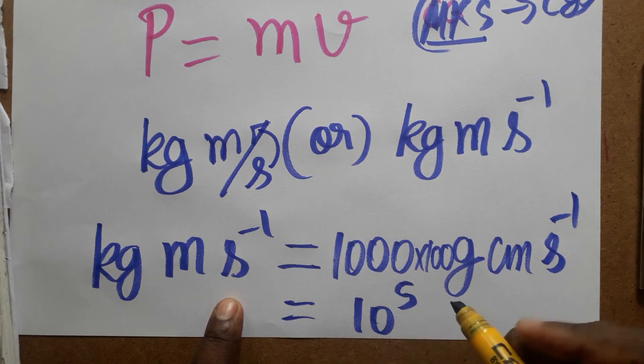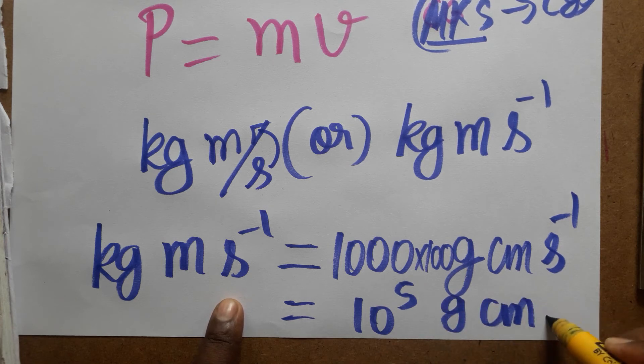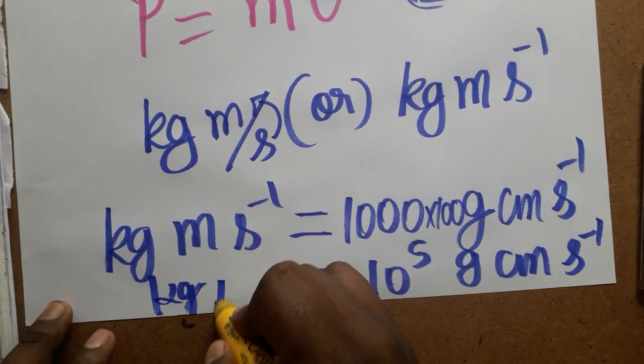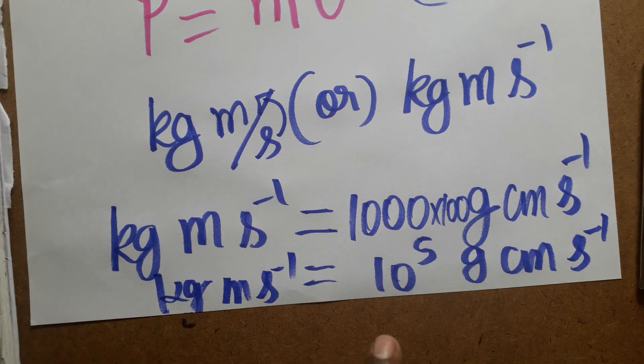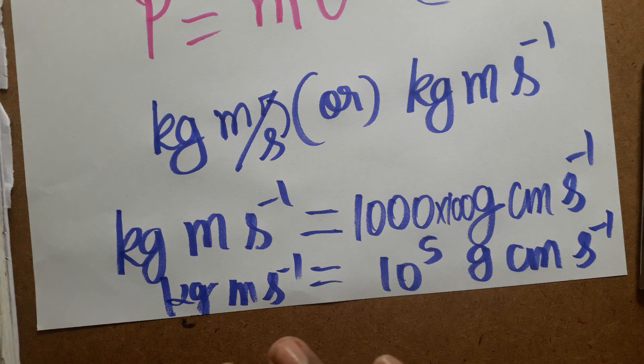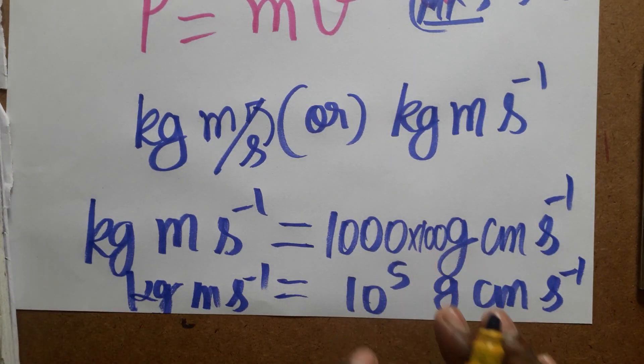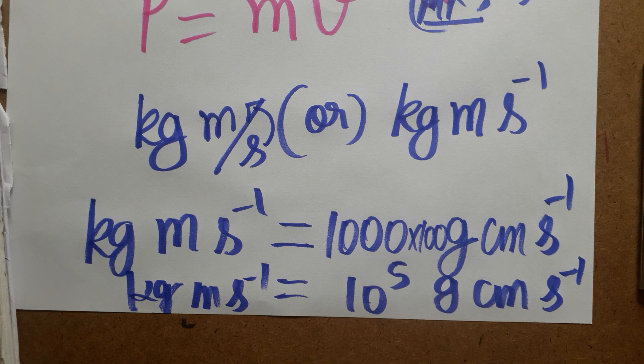So that means it's 10 to the power 5 gram centimeter second minus one. If we converted kilogram meter second minus one to gram centimeter second minus one from MKS system to CGS system, the power will get as 10 to the power 5. If you like my channel, please subscribe. Thank you everyone.